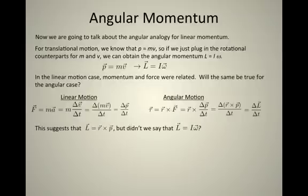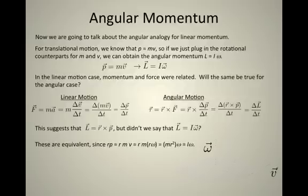This suggests that angular momentum is equal to this new thing R cross p. We just said though that angular momentum was equal to Iω. Are these two things the same?